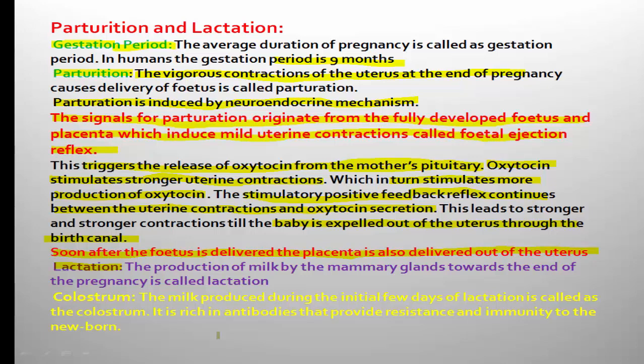In human females, pregnancy is also associated with changes in the function of mammary glands, which is why mammary glands are studied along with the female reproductive system. In the non-pregnant female, the mammary glands are in an inactive condition. During pregnancy, due to hormonal changes in the female body, the mammary glands are activated, and at the end of pregnancy — after parturition, when the baby is delivered — milk production is started by the mammary glands.